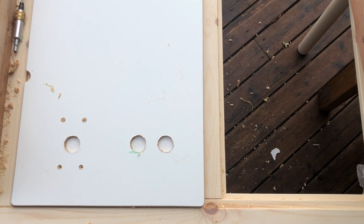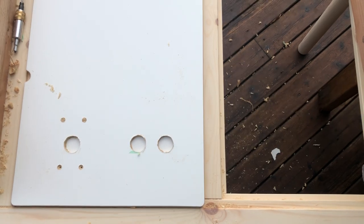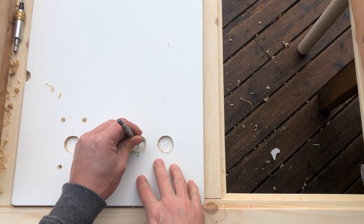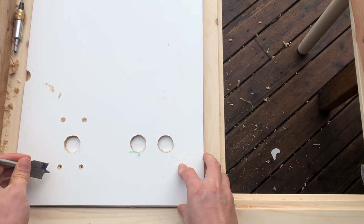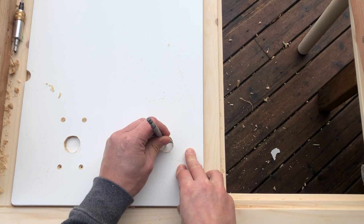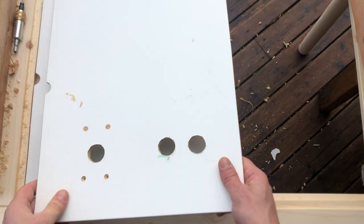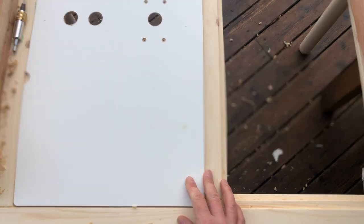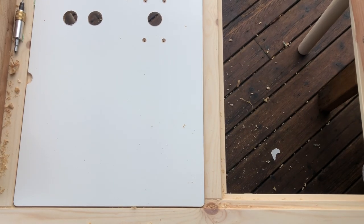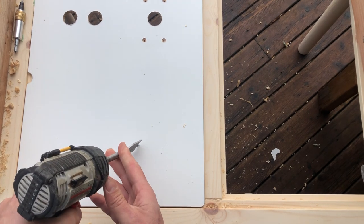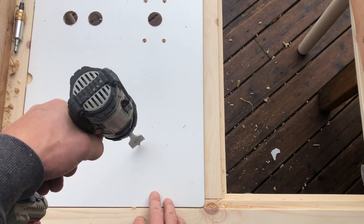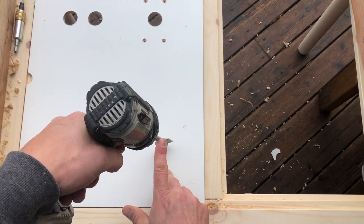Once you have that, you can go ahead and mark the two holes, the three holes depending on how many buttons you want in there. Go ahead and pre-drill a bit before we know where the hole is.